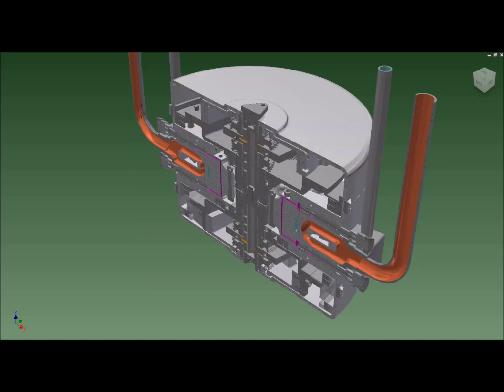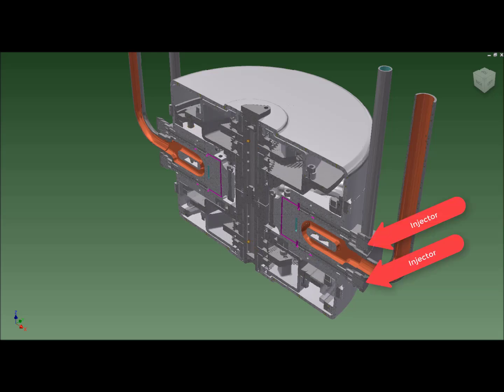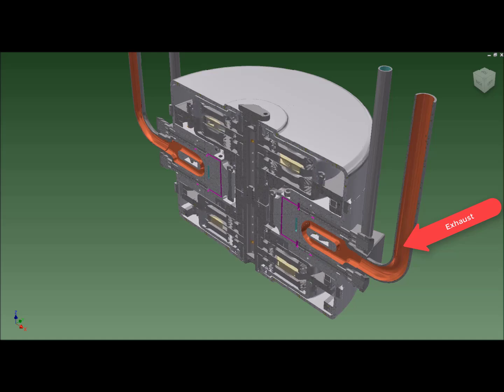This section through the combustion piston assembly shows the direct injection fuel system driven by microcontroller-actuated solenoids. Also prominent in this section are the exhaust ports and pipes which deliver heat to the boiler situated above. The coolant pipes also circulate coolant to heat exchangers in the boiler.